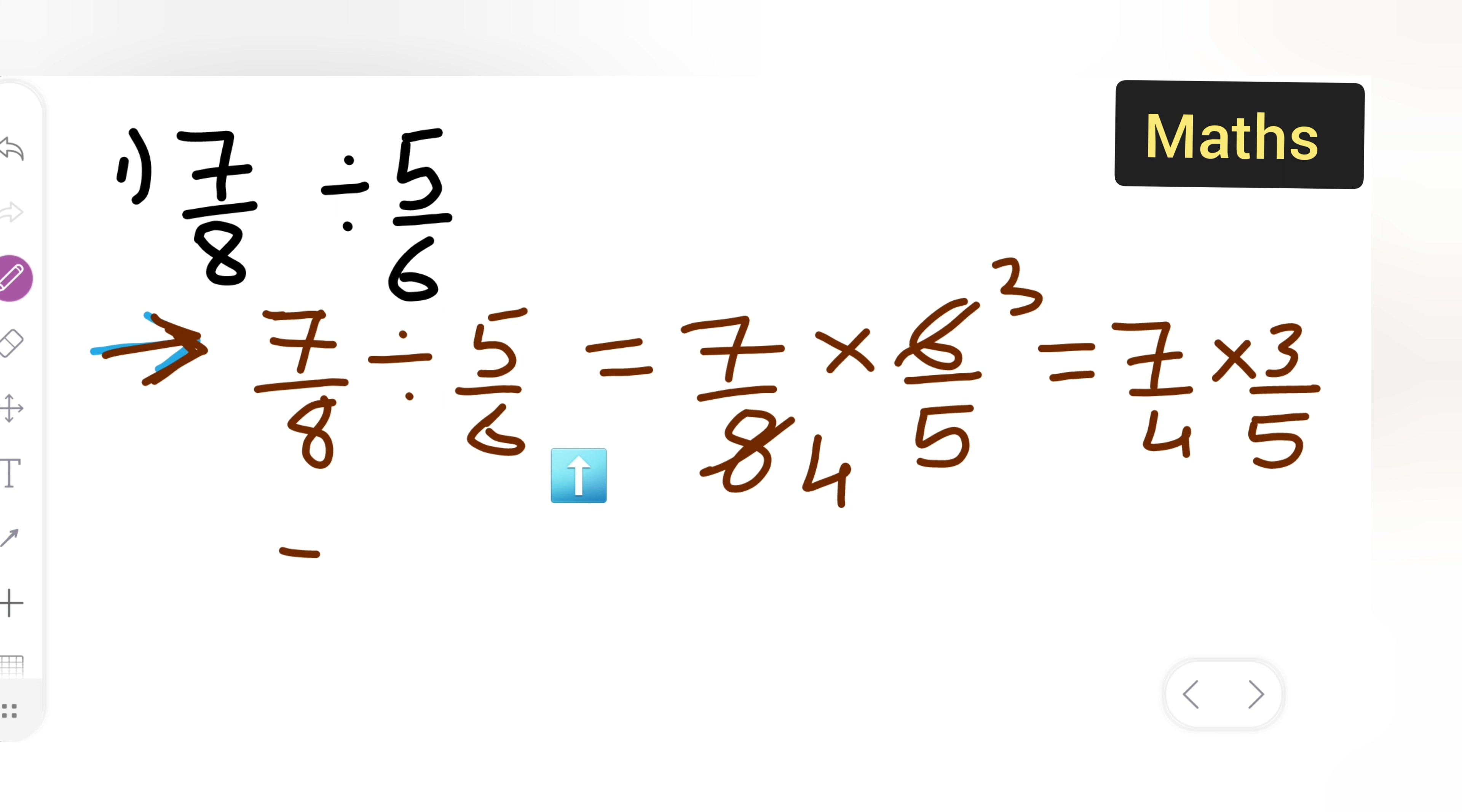Basically you all are going to multiply this, right? 7, 3s are 21, so 21 upon, the denominator also you have to multiply. So 4, 5s are, your answer will be 4, 5s are 20, right?